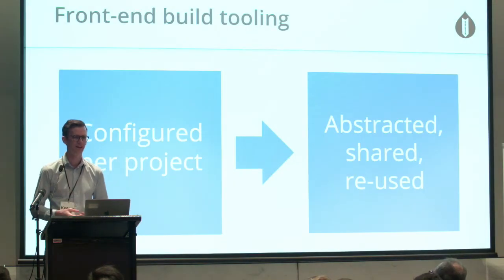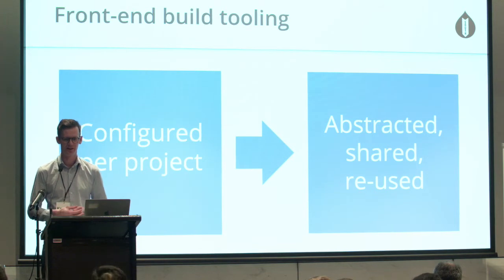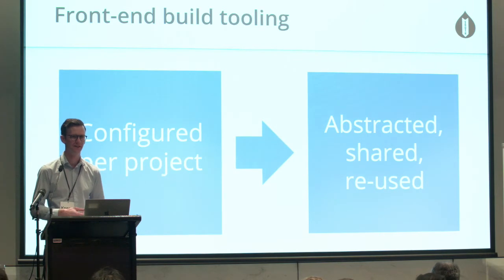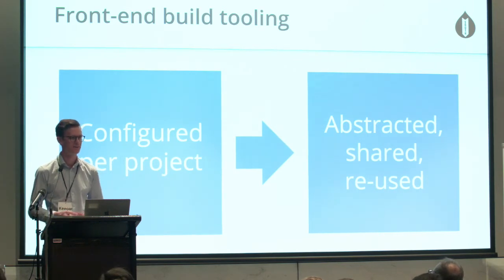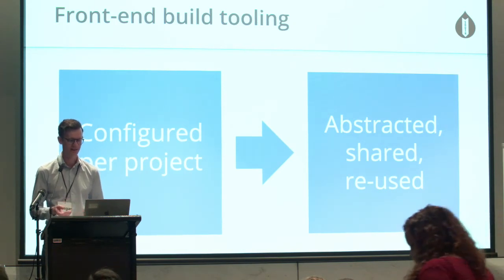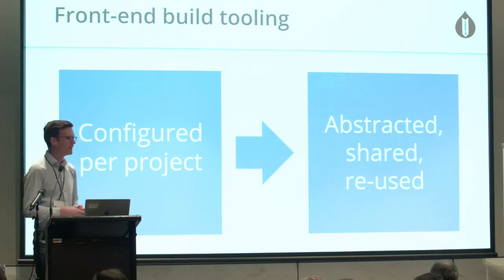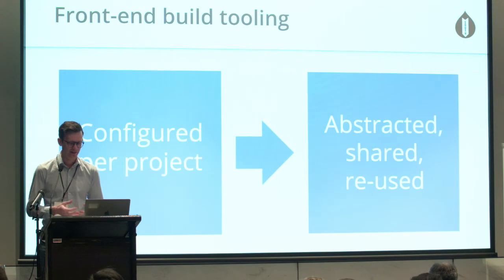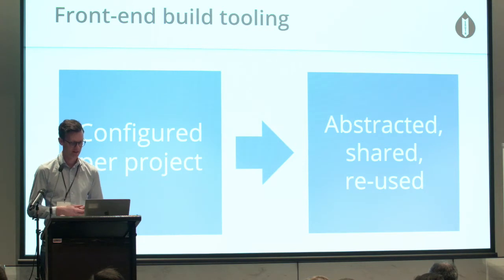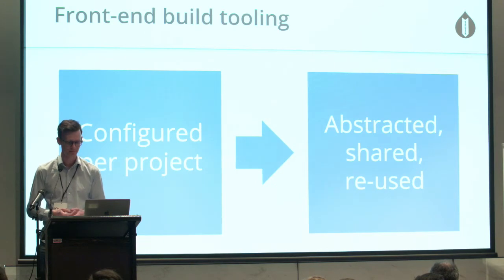I want to talk about what I think is an industry-wide shift that's been happening in front-end dev. There's been a shift in build tooling away from build tools being configured in each project towards build tools being configured or abstracted out into separate reusable packages and used across multiple projects. My talk today has three parts: in the first 10 minutes I'll look at why this shift is occurring and how we made it work for us, then 20 minutes on a demonstration of writing webpack config files in a reusable way, and in the final 10 minutes I'll look at the complexities that arise when managing multiple interrelated packages.